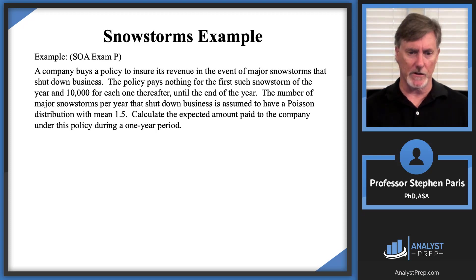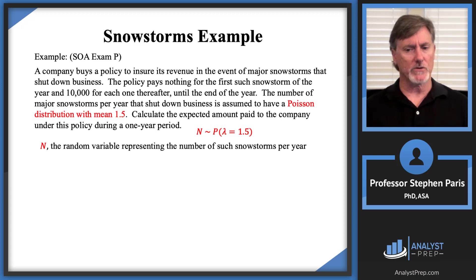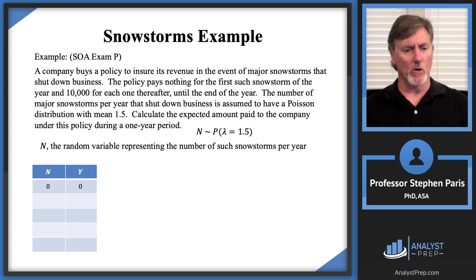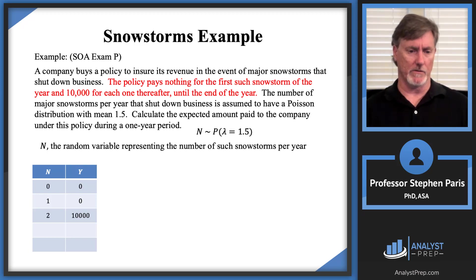Let N denote the random variable representing the number of snowstorms per year that shut down business, where N follows a Poisson distribution with parameter lambda equal to 1.5. Let Y represent the amount paid to the company. If N is 0 or 1, there is no payment. With exactly two snowstorms, the company receives $10,000; with three snowstorms, $20,000; and so forth.